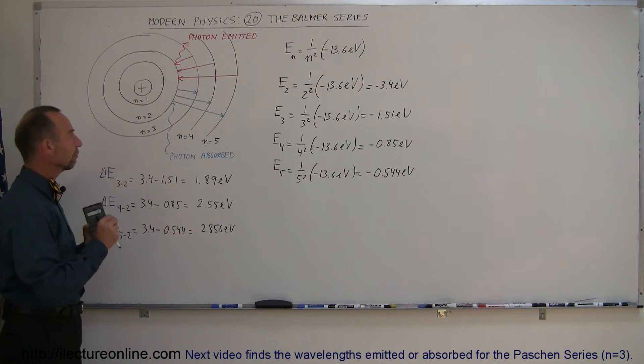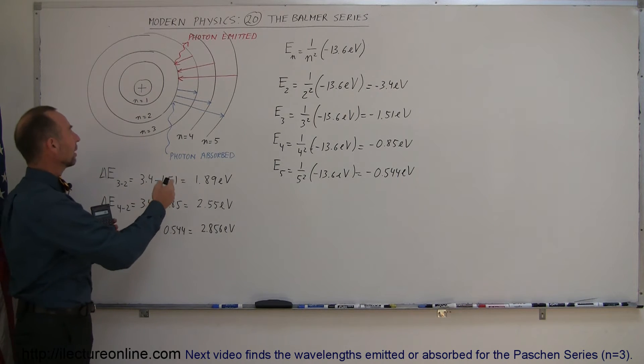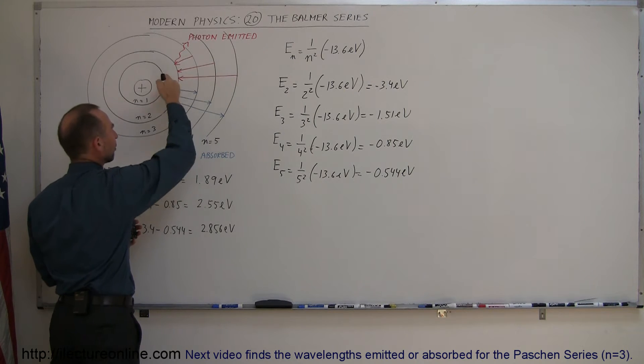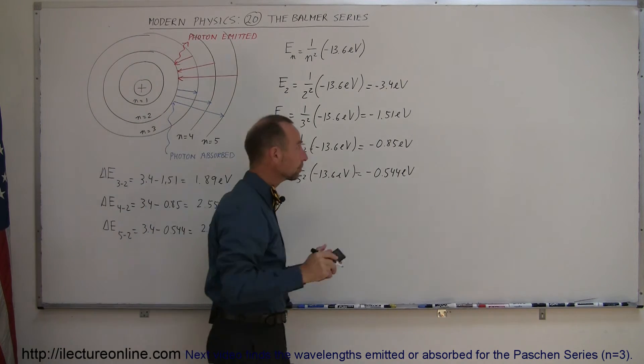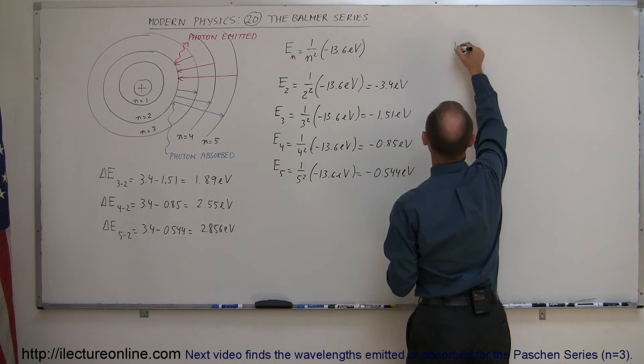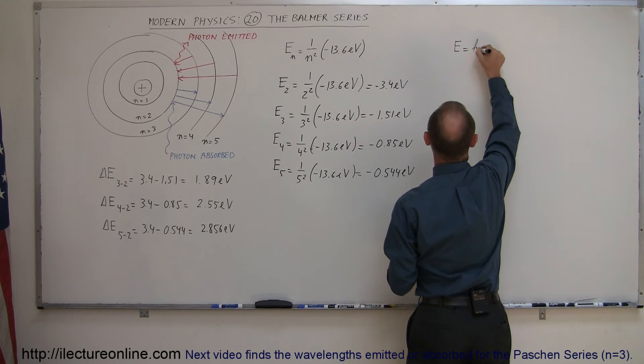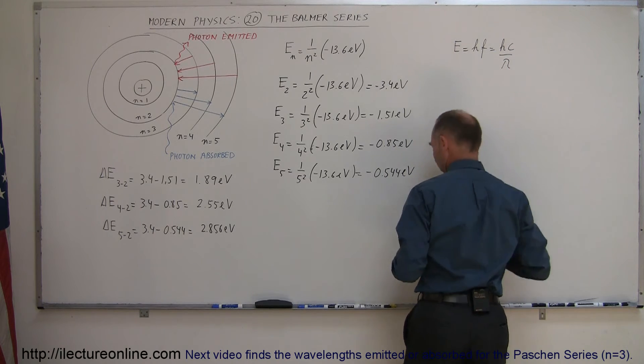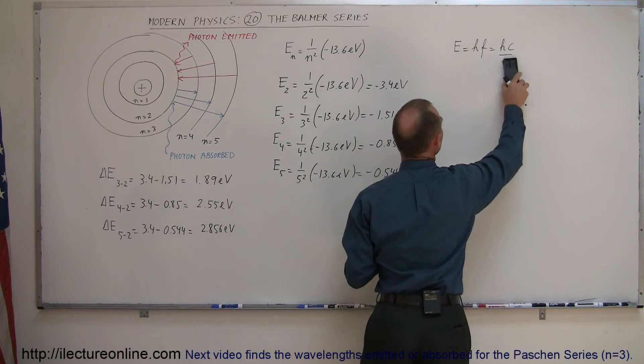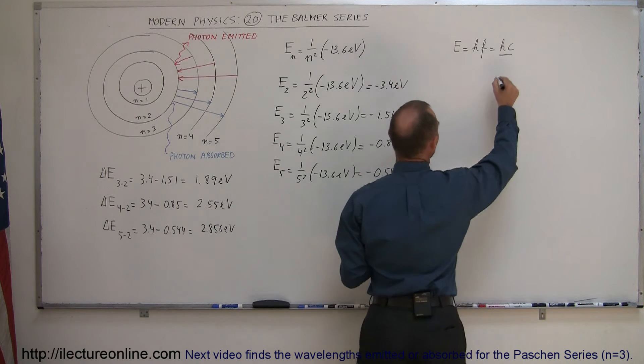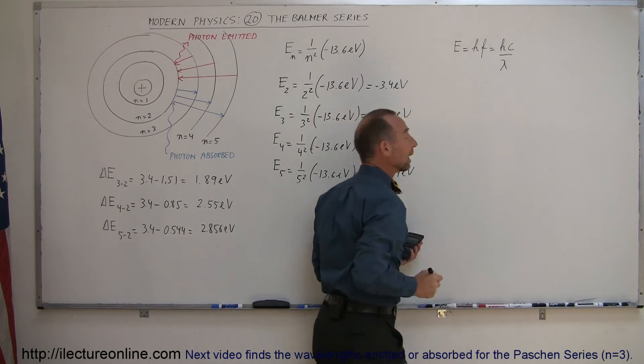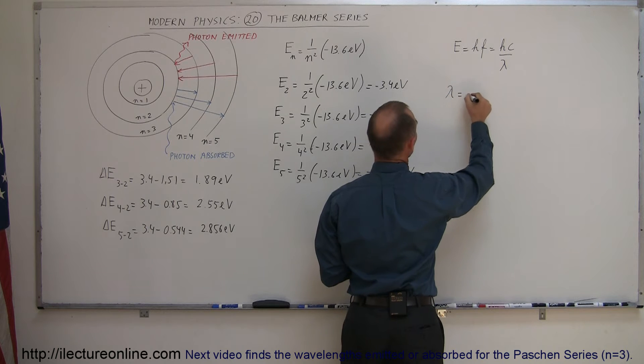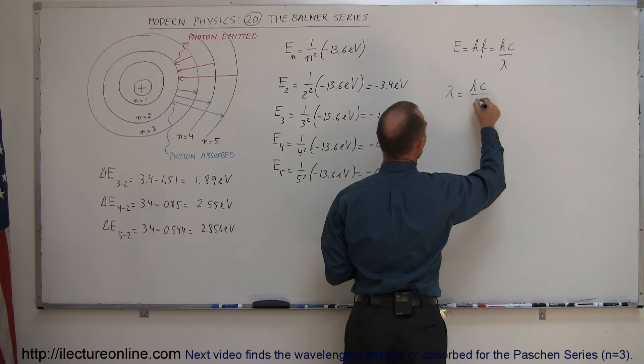So now we're going to find what photon will be emitted when the electron does jump from the third to the second, from the fourth to the second, from the fifth to the second. We know that the energy of a photon is equal to Planck's constant times the frequency, which is equal to hc over lambda. Solving that for lambda, lambda is equal to hc over the energy level.